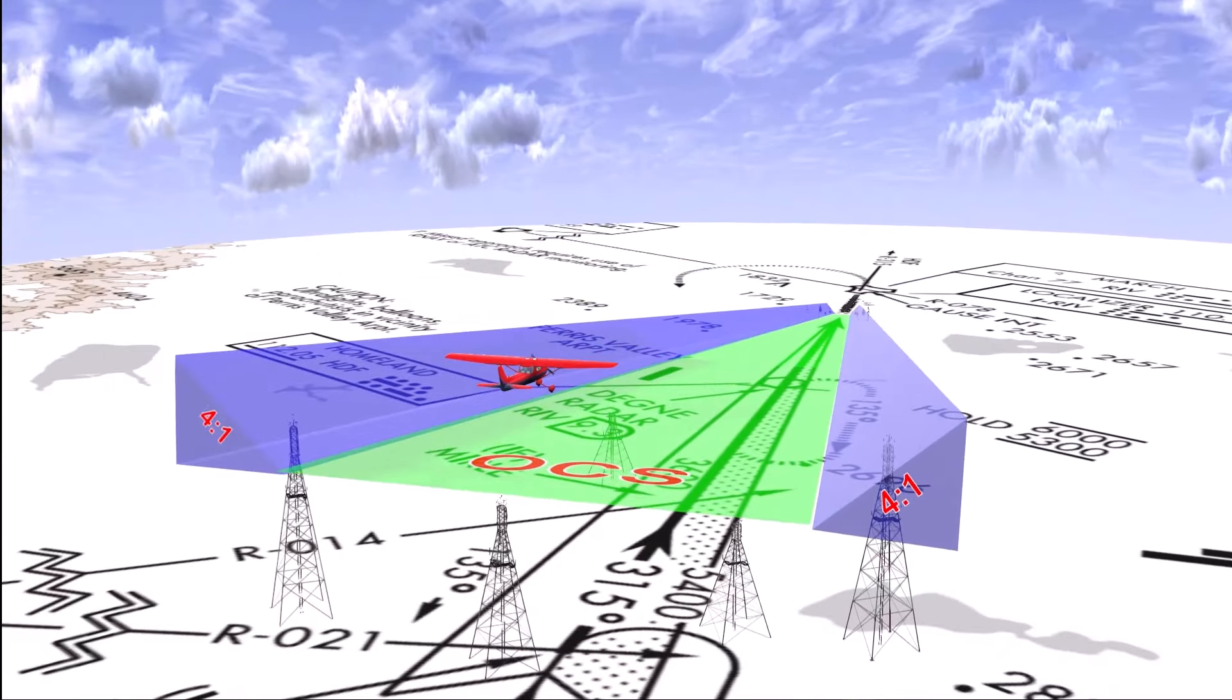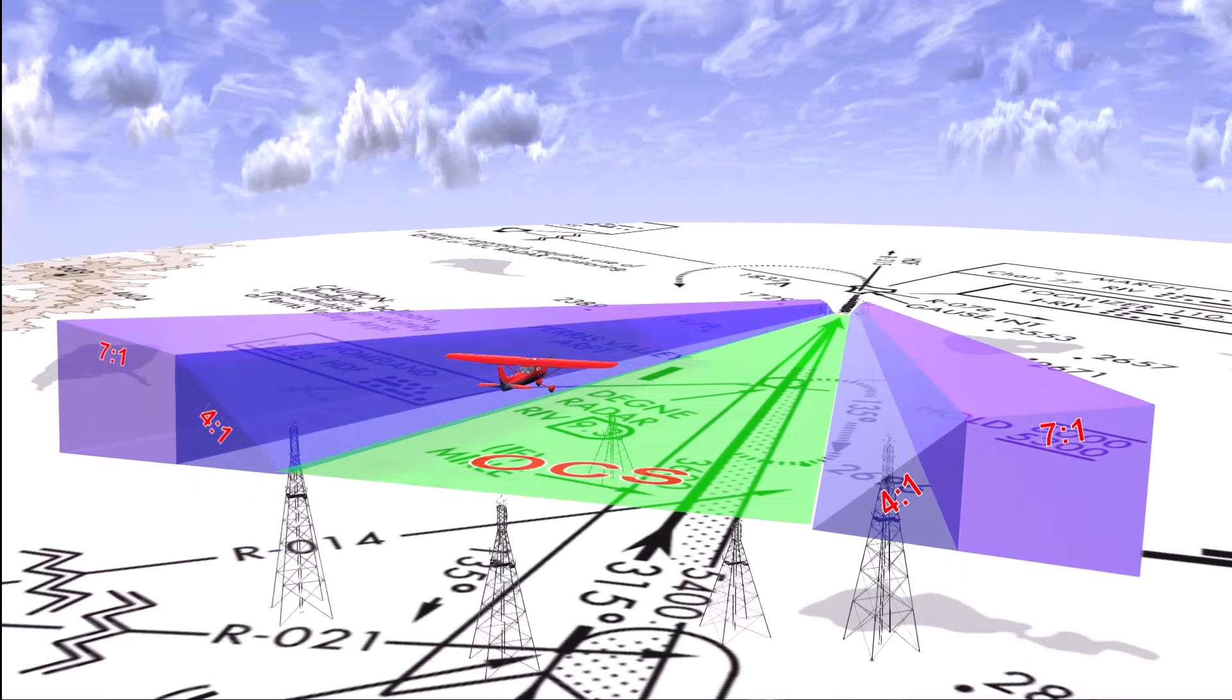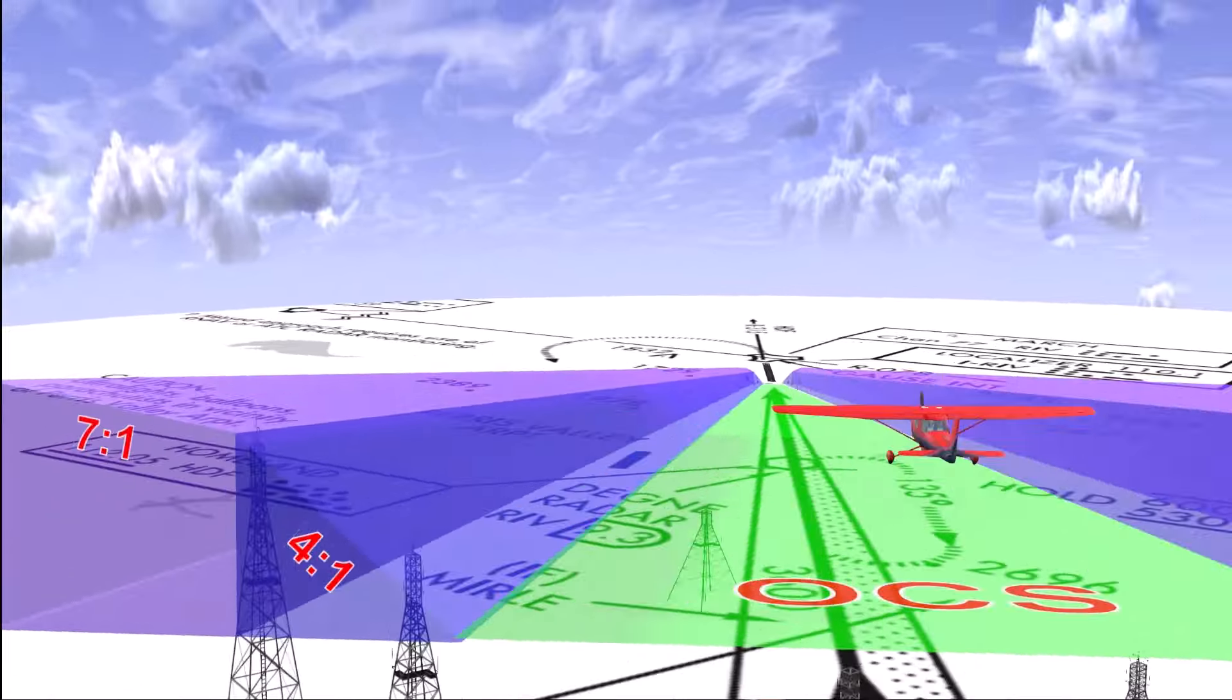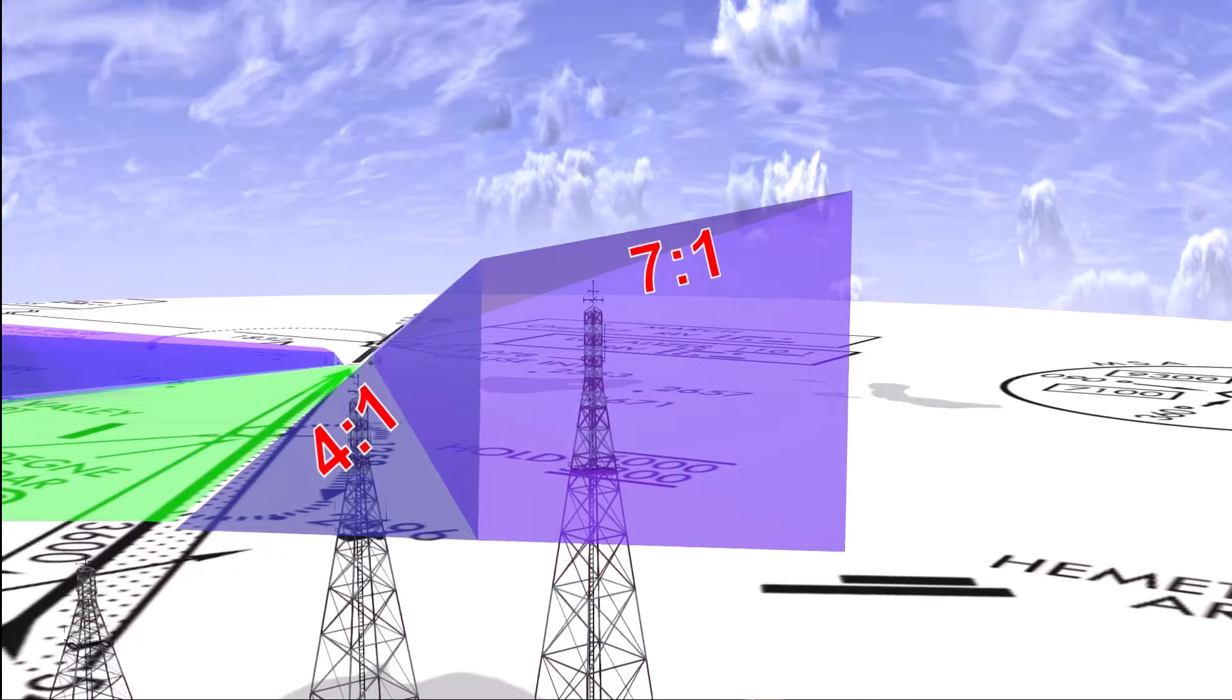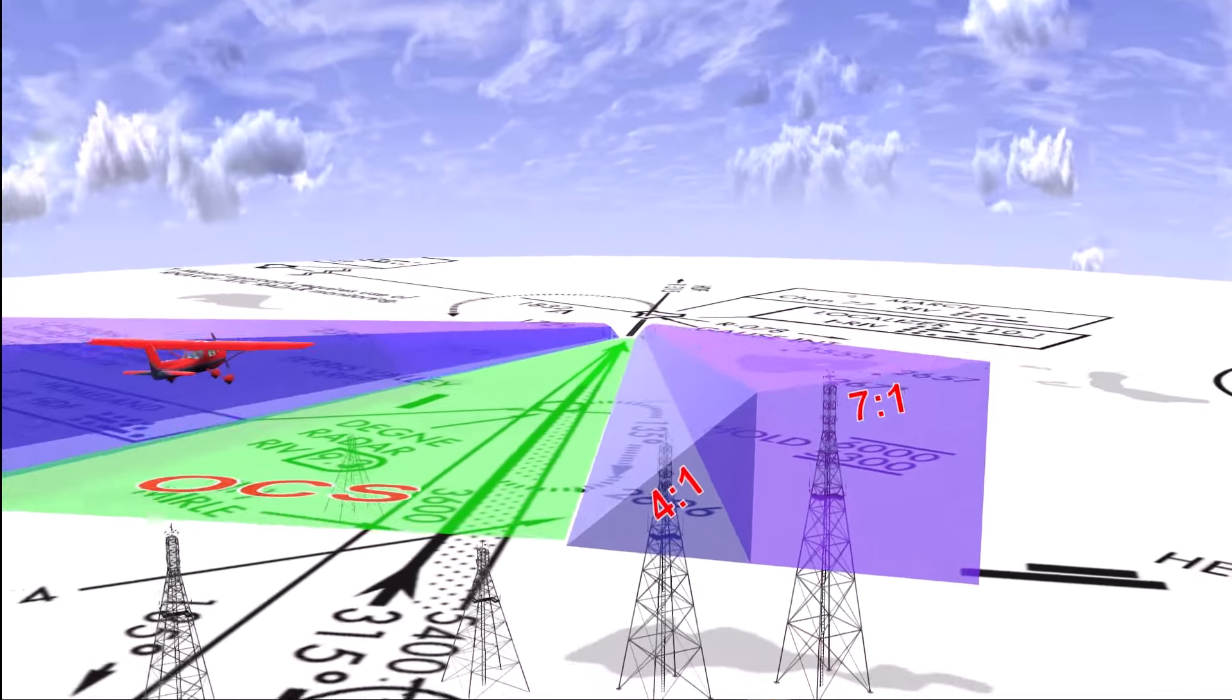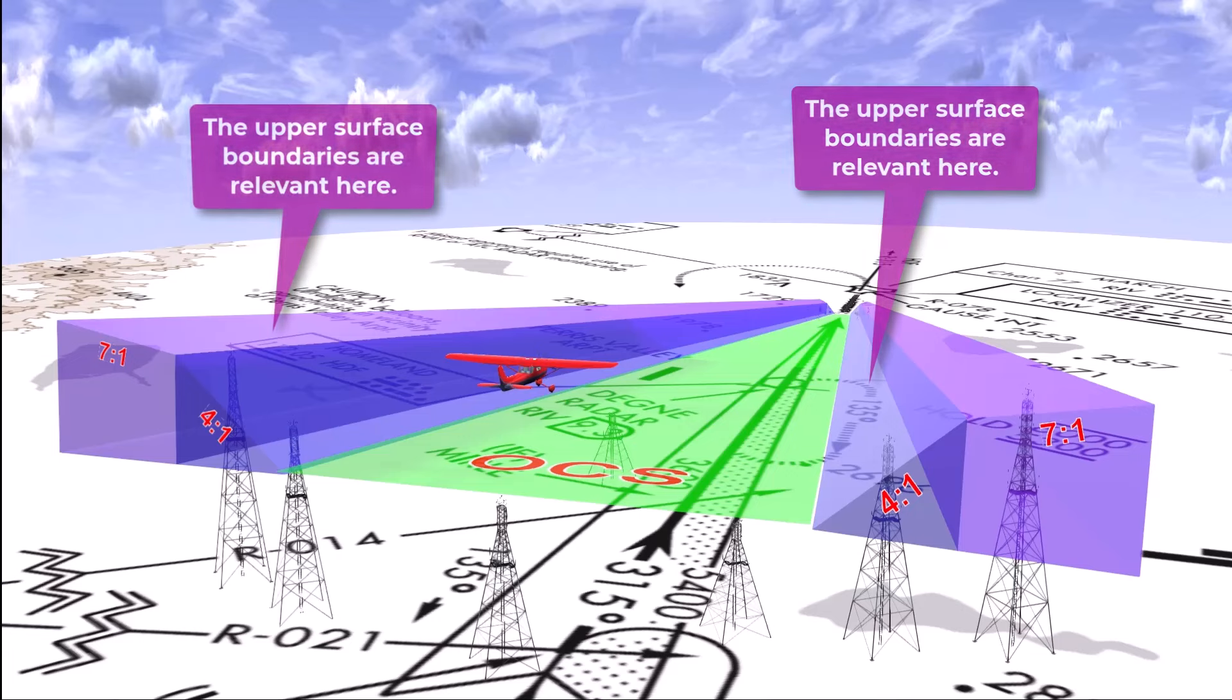Next to each triangular geometry is a trapezoidal area with an upward surface sloping outward at a 7 to 1 ratio. Obstacles may penetrate into the purple area but not above its upper surface. Now, I've shown the triangular and trapezoidal areas here as solid for visual effect, but it's really their upper sloping surfaces that are actually relevant here.